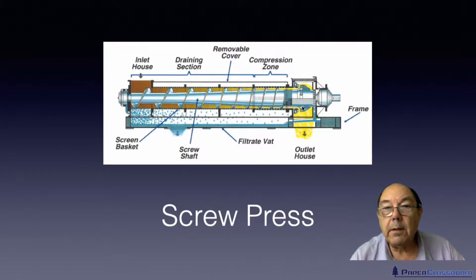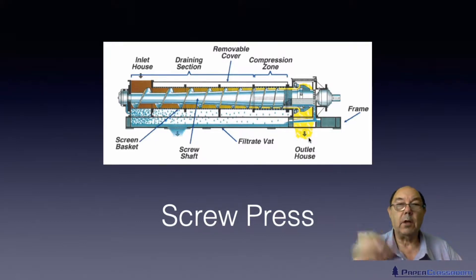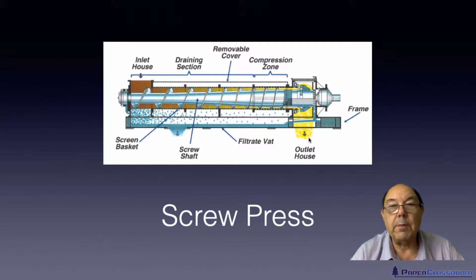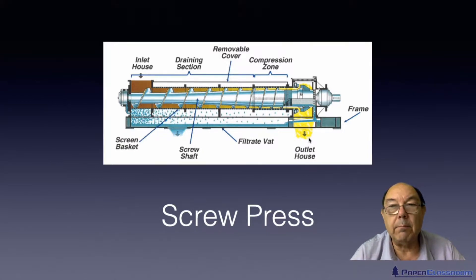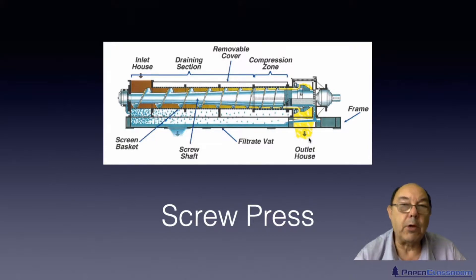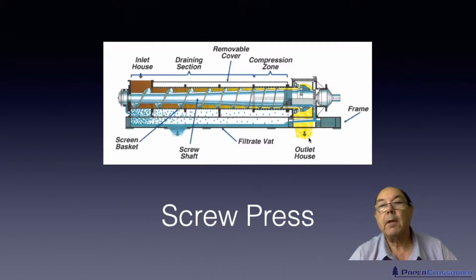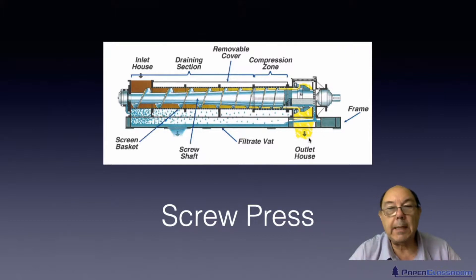We then extrude something out of the end — usually little pellets — which can often be sold, or dried and burned in garden heaters or on barbecues. So that's the screw press.